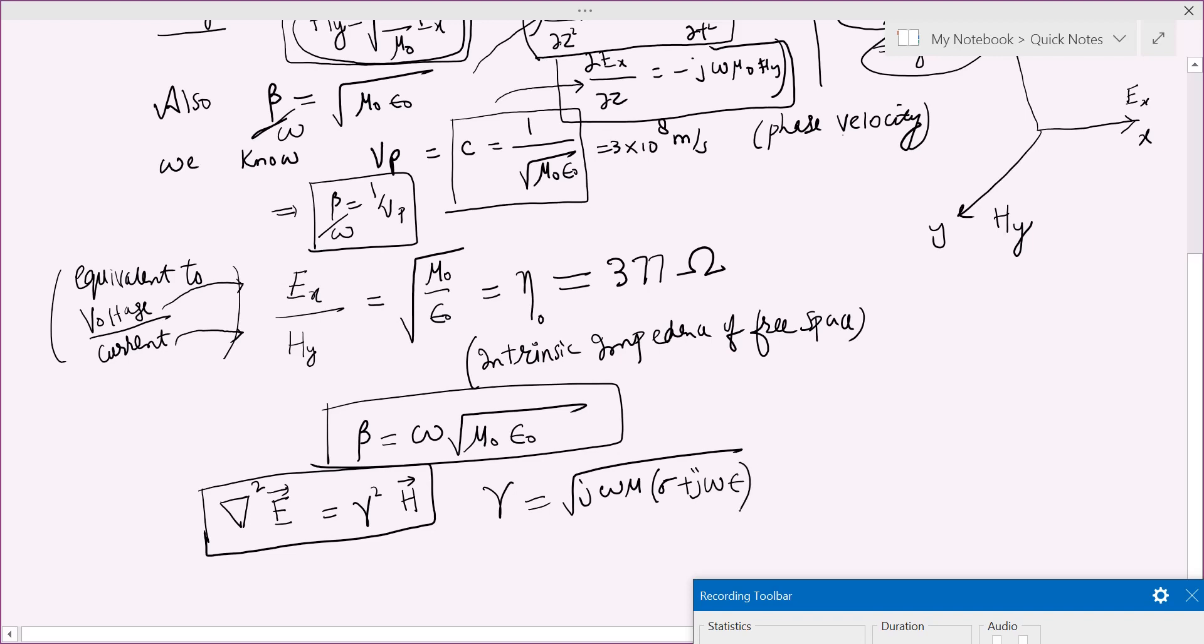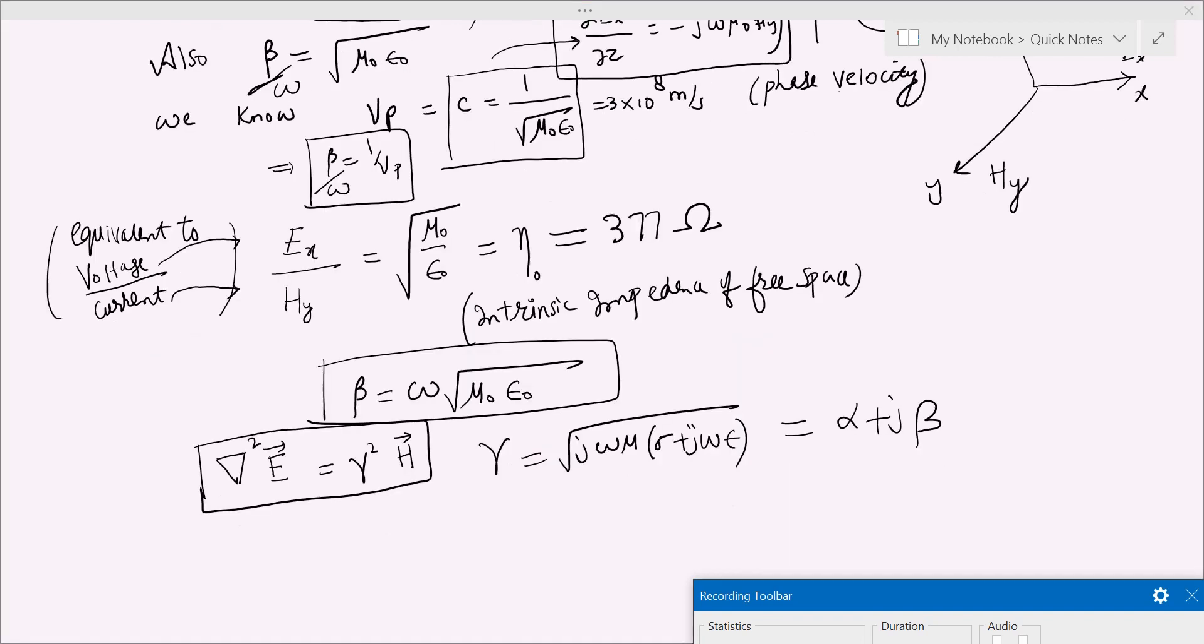This gamma is under root of j omega mu sigma plus j omega epsilon. And at that time, we wrote this as alpha plus j beta. Now why I am writing it again: this beta is actually the same thing, the beta here. So at a simple observation is, suppose if you write here gamma squared, that will be alpha squared minus beta squared plus 2 alpha beta.